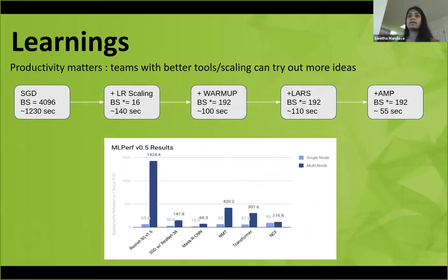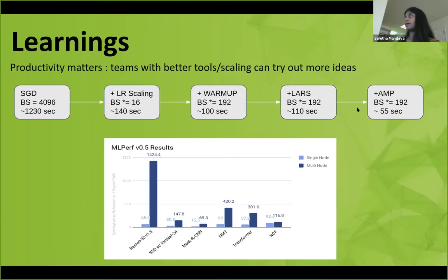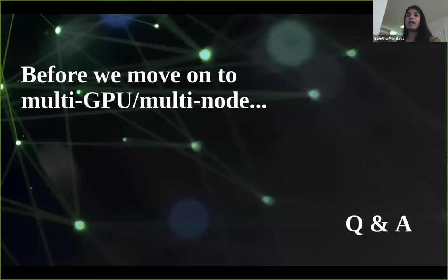Let me summarize the learnings so far. It is very easy to get a throughput increase by increasing your batch size, but that comes with issues of losing generalization and accuracy. Some tricks to alleviate this are learning rate scaling, warmup, and layer-wise adaptive optimizers like LARS to allow you to go to a higher batch size. And another trick is AMP — automatic mixed precision training — which lets you retain accuracy while getting at least a 2x speedup.